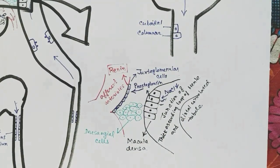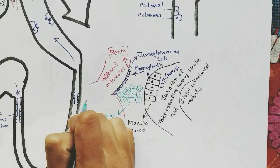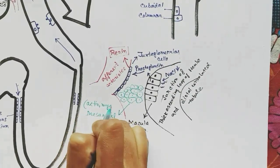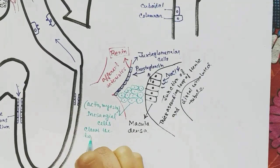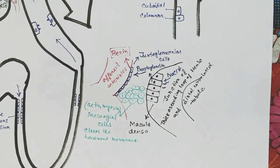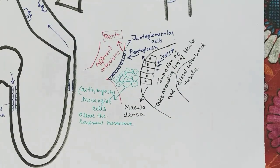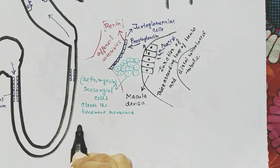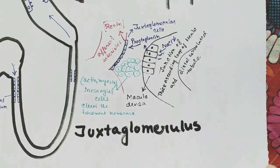The juxtaglomerular cells also release renin when baroreceptors sense a decrease in blood pressure. The mesangial cells have actin and myosin within them, which helps these cells contract and clean debris from the basement membrane to keep it clean for better filtration. All three of these cells together make up the juxtaglomerular apparatus.